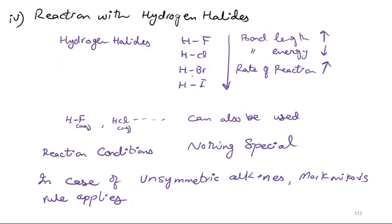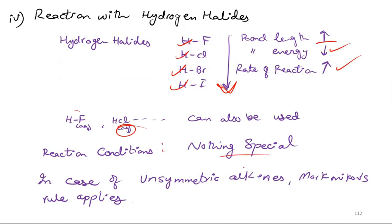The reaction with hydrogen halide uses HF, HCl, HBr, and HI. When you go from HF to HI, the bond length increases, the bond energy decreases, and the rate of reaction increases. HF, HCl, HBr, and HI can also be used in aqueous form. Reaction conditions are nothing special.